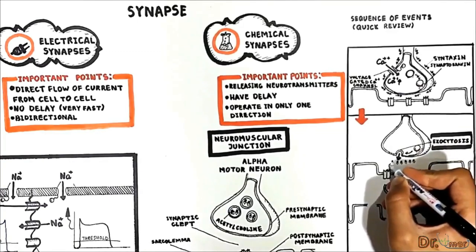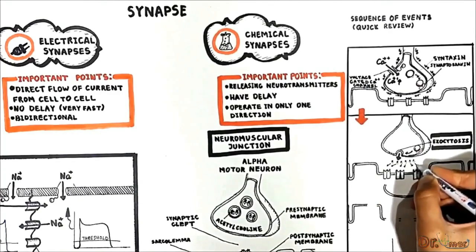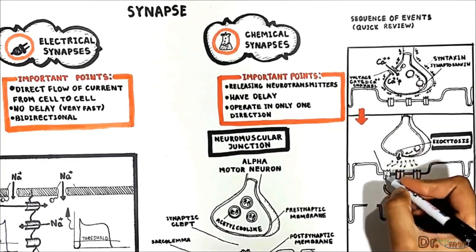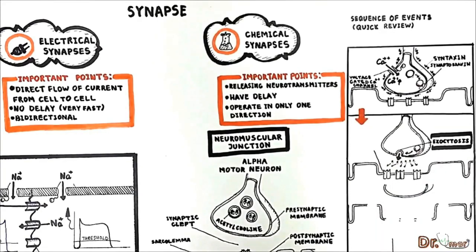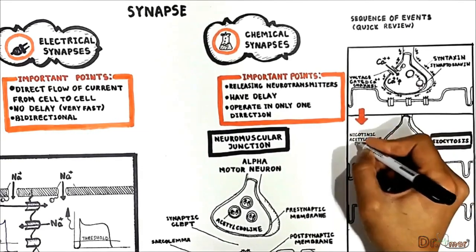Next acetylcholine diffuses across synaptic cleft to the post synaptic membrane. In a post synaptic membrane we have a special channel receptor which has binding sites for the acetylcholine. This channel is an example of ligand-gated channel and in neuromuscular junction this is called a nicotinic acetylcholine receptor.